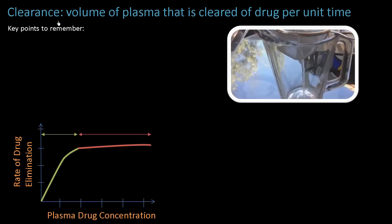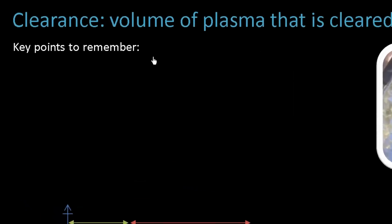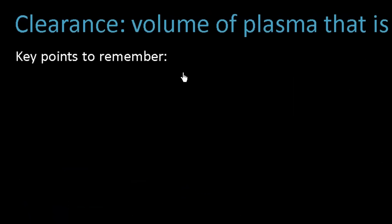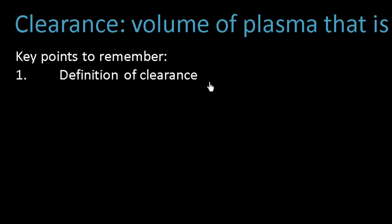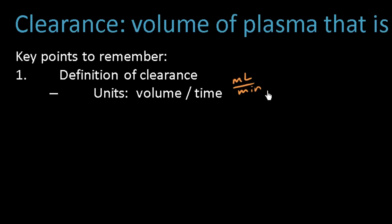Now we get to talk about drug clearance. Starting with the definition: clearance is the volume of plasma that is cleared of drug per unit time. It is a volume per unit time — the units are milliliters per minute. Note that this says nothing about the amount of drug.